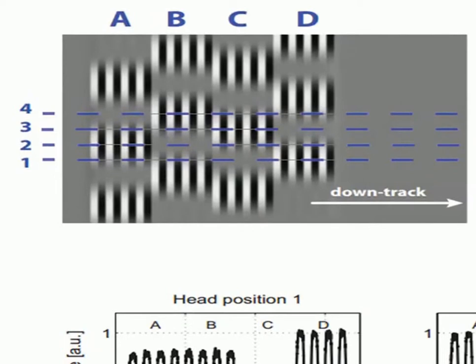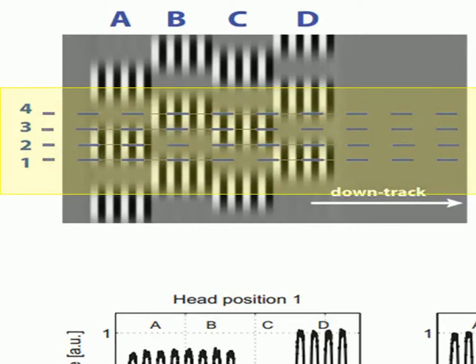Left to right is the track direction and up and down is the radial direction. As the disk spins, the head will detect first the burst A, then B, C and D in that order. We can see four different head positions enumerated 1, 2, 3 and 4 in the figure.